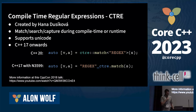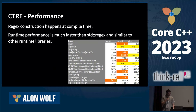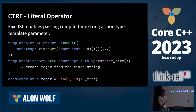Now it's time to move to the third library. Compile time regular expressions, or CTRE, is a library for using regular expressions at compile time, created by Hannah Dusikora. We can create a regex by passing the string either as a non-type template parameter or by calling the CTRE literal operator. The construction of the regex happens at compile time, so there is zero runtime overhead. If you provide an invalid pattern, you will get a compilation error. In terms of runtime performance, it is much faster than std::regex and has similar performance to boost::regex. The CTRE literal operator uses a helper class called fixed_string, which is just a wrapper around a fixed size array.